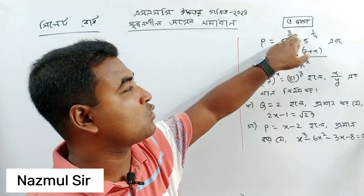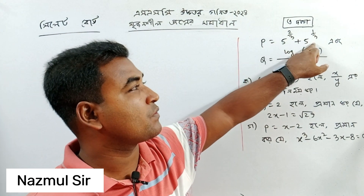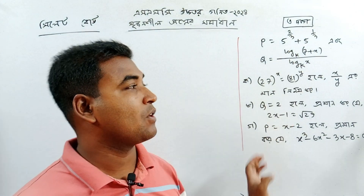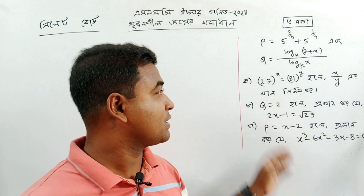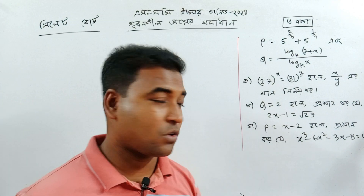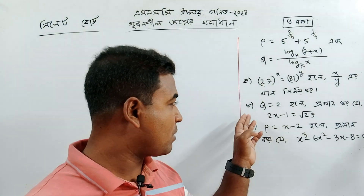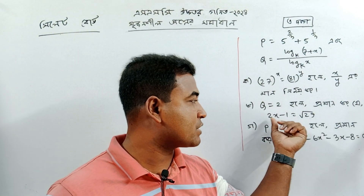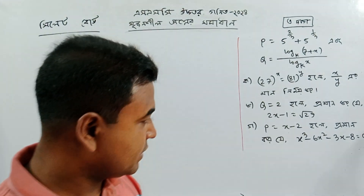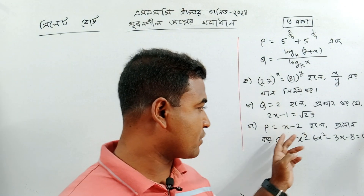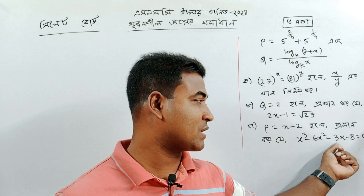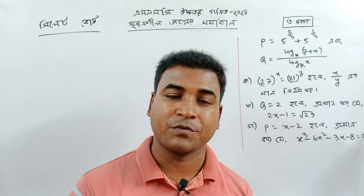Problem 1: p equals 5 to the power 2/3 plus 5 to the power 1/3. Problem 2: q equals log k base 7 plus x divided by log k base x. If x/y has a certain value and q equals 2, find the answer. Problem 3: given 2x minus 1 equals root of 29, and p equals x minus 2, find the value when x cube minus 6x square minus 3x minus 8 equals 0.